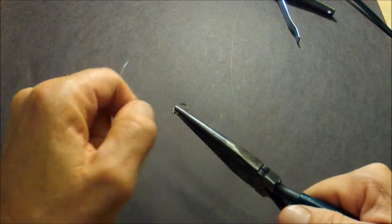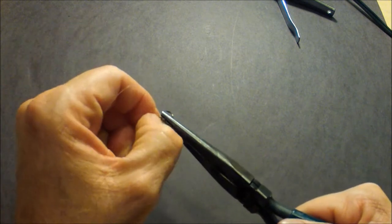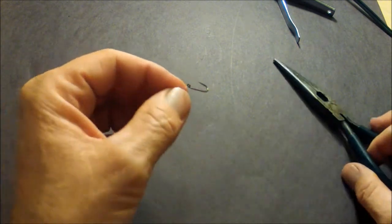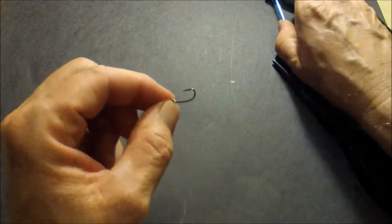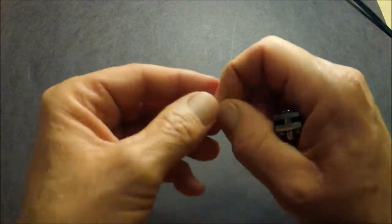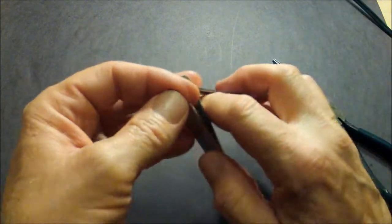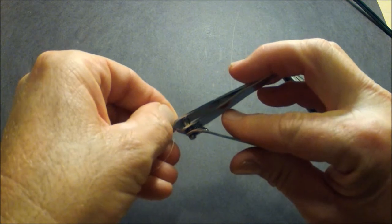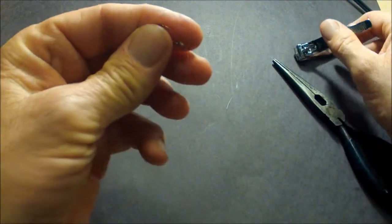I'm going to take my fingernail and kind of run it out to the end as far as I can while I'm tightening it down. Okay, I'm going to trim off the excess tail there and leave about a sixteenth of an inch or so at the end.